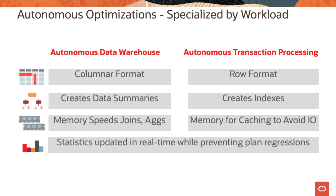Let us now look at the autonomous optimizations which are part of Autonomous Data Warehouse and Autonomous Transaction Processing. Autonomous Data Warehouse stores data in columnar format and creates data summaries to speed up in-memory joins and aggregates. Autonomous Transaction Processing stores data in row format; indexes are created automatically and memory is used for caching to avoid I/O. In both services, statistics are updated in real time while preventing plan regressions.